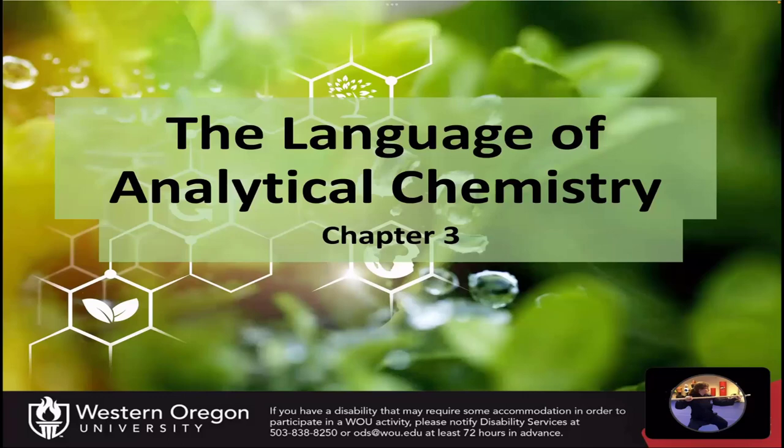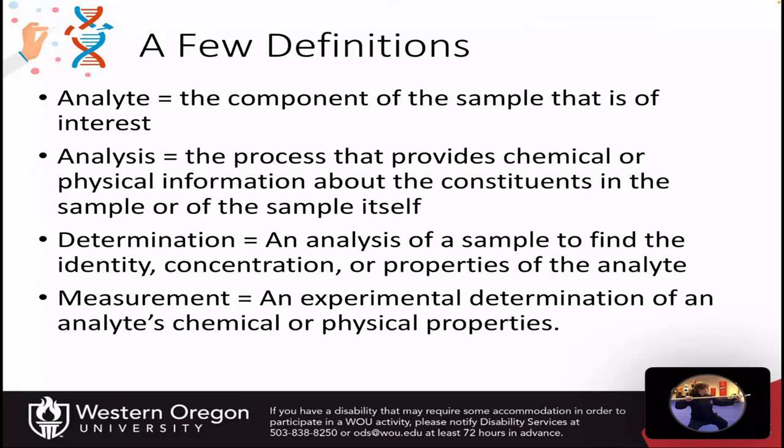Chapter three is going to focus on the language of analytical chemistry and start giving you some mathematical definitions for how you make measurements in the lab. The first definition is analyte — this is the component of the sample that you're interested in finding out about. Analysis is the process that provides chemical or physical information about the constituents in the sample. A determination is an analysis of a sample to find the identity, concentration, or other properties of the analyte. And a specific measurement is the experimental determination of the analyte's chemical or physical properties.